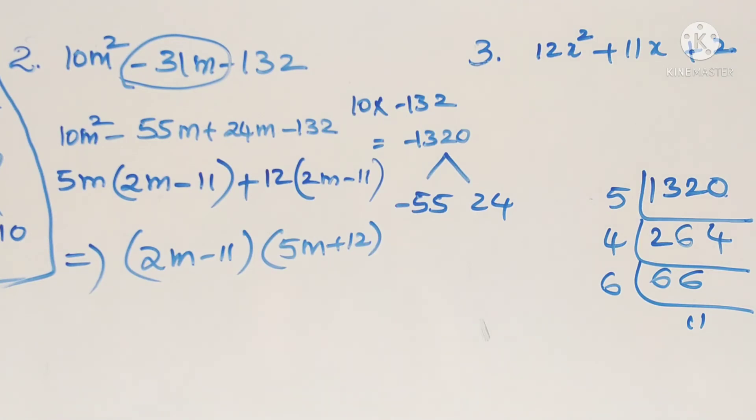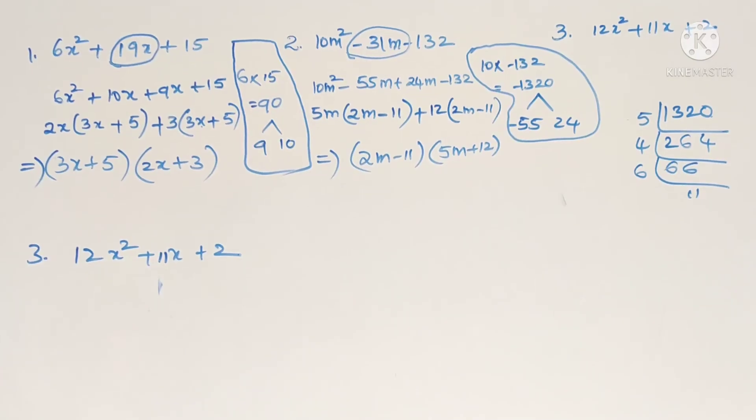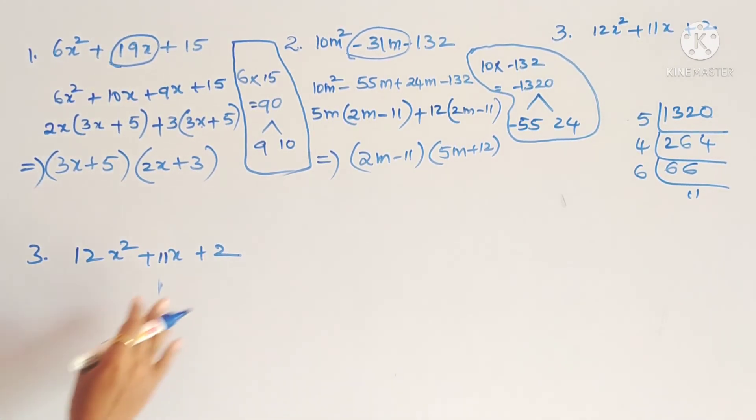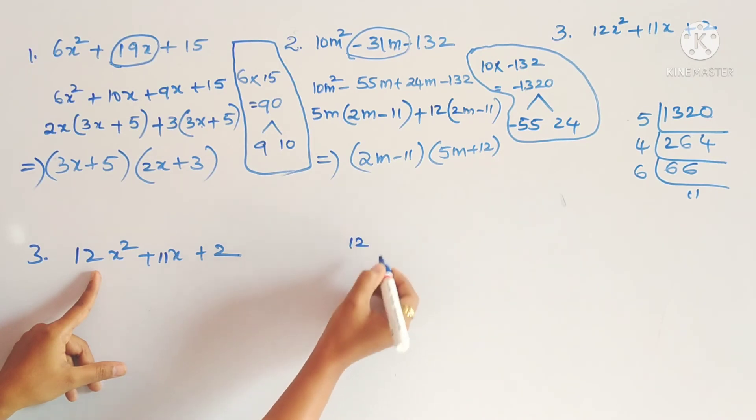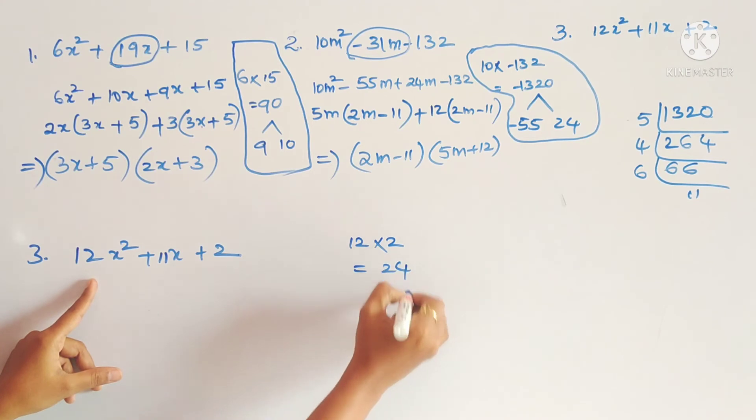Now we will see our last problem also. So last one: 12x square plus 11x plus 2. So what is the coefficient of x square? 12. And the constant term is 2. 12 into 2 is 24.